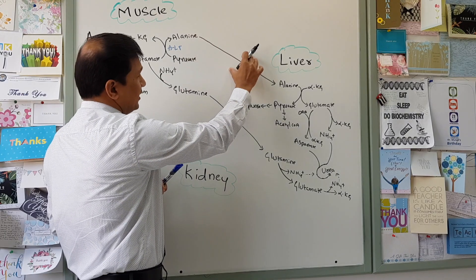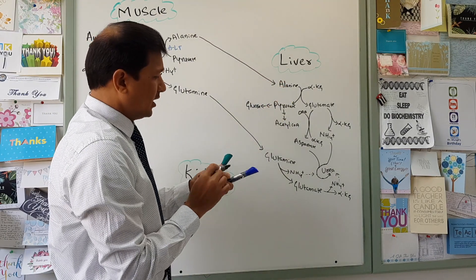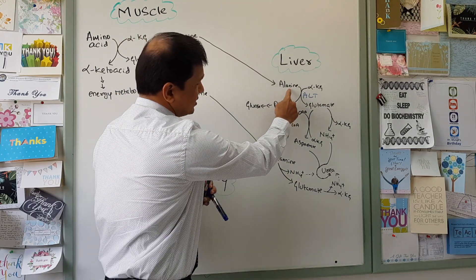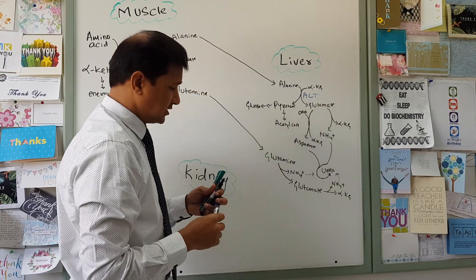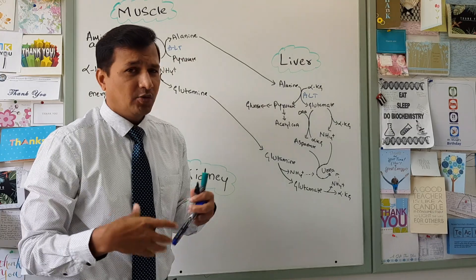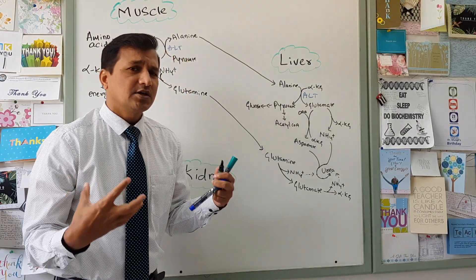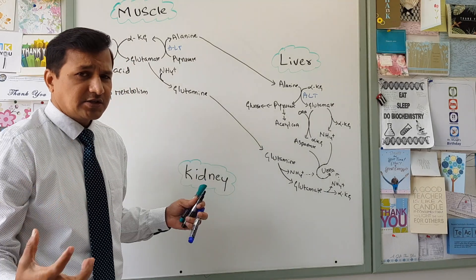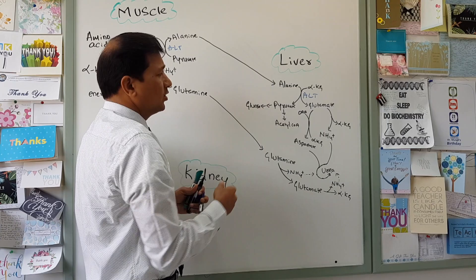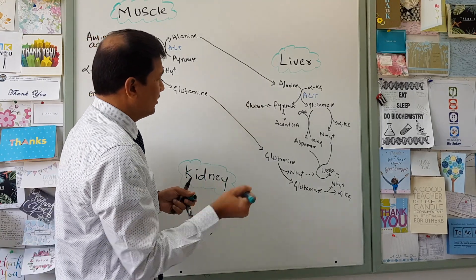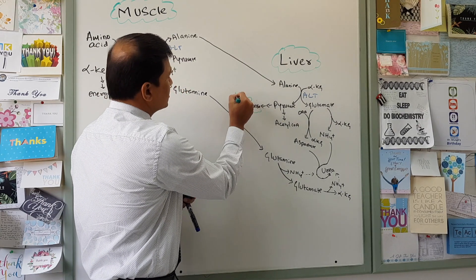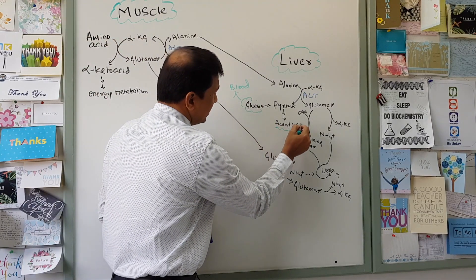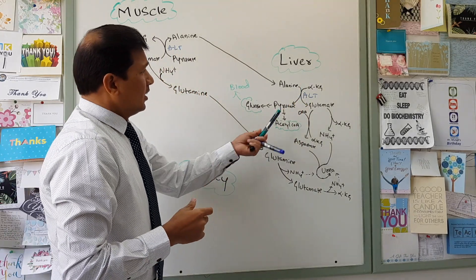Now, alanine entering the blood is taken up by the liver. In the liver, alanine undergoes a transamination reaction conducted by ALT enzyme — alanine transaminase — giving its amino group to alpha-ketoglutarate, making glutamate, while the carbon part of alanine is converted to pyruvate. In starvation, fasting, or cachexia conditions, pyruvate predominantly undergoes gluconeogenesis to make glucose, which is released into the blood contributing to blood glucose levels. Some pyruvate can also be converted into acetyl-CoA.